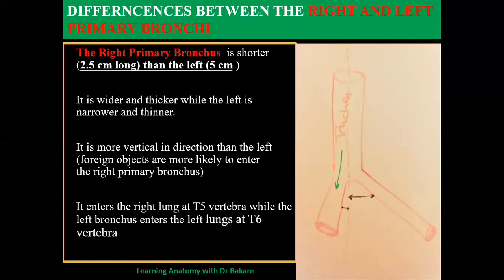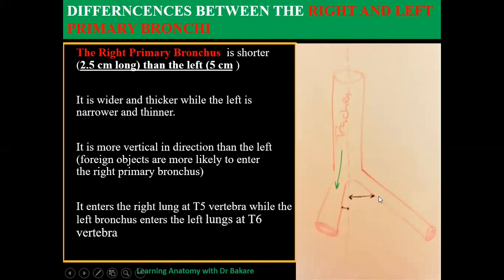There are differences between the right and left primary bronchi. The right primary bronchus tends to be shorter — about 2.5 cm in length — while the left is 5 cm in length. The right is also wider and closer to the median plane, while the left primary bronchus tends to shift further away from the median plane.